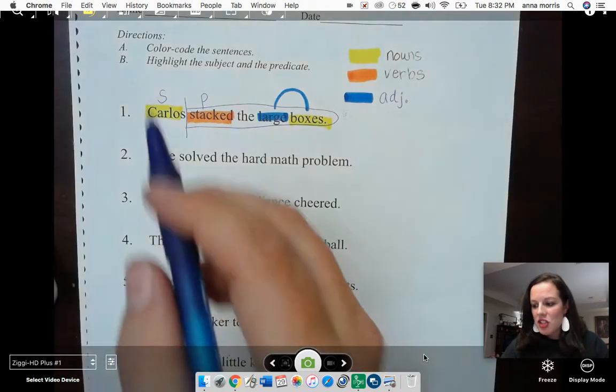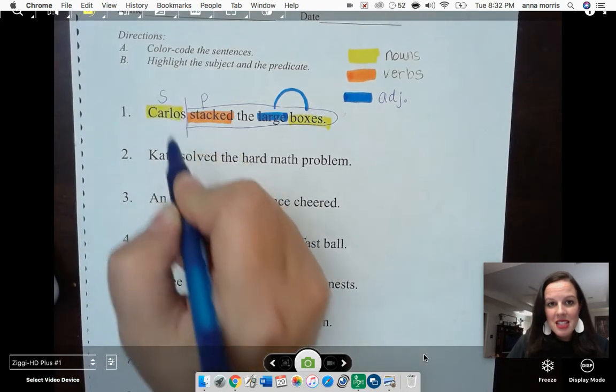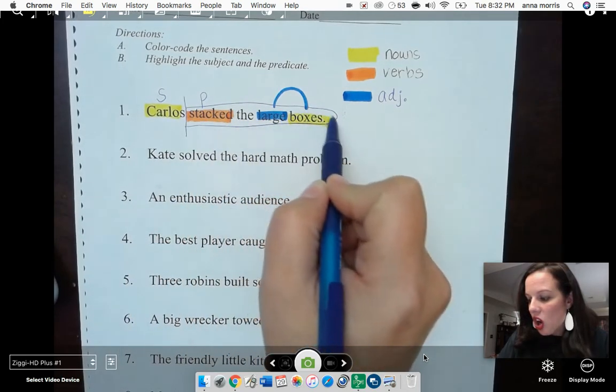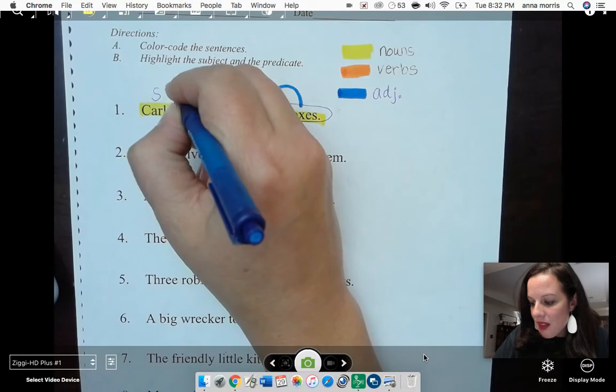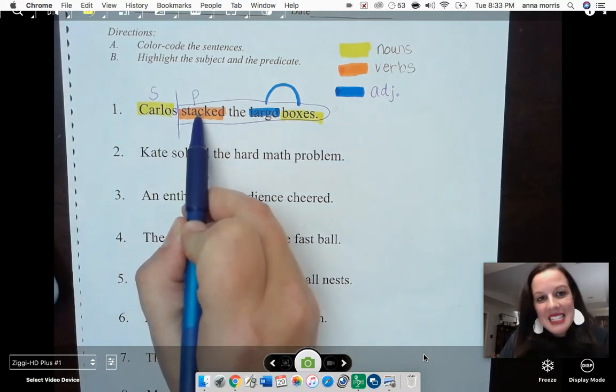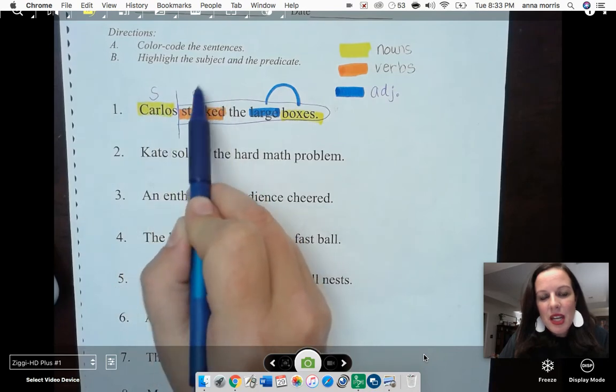Lastly, I have to chop my sentence into two, separating the subject from the predicate. The subject tells who or what. Who stacked the boxes? Carlos. And what did he do? He stacked the large boxes. I chopped my sentence right between Carlos and stacked. I labeled the subject with an S and the predicate phrase with a P.